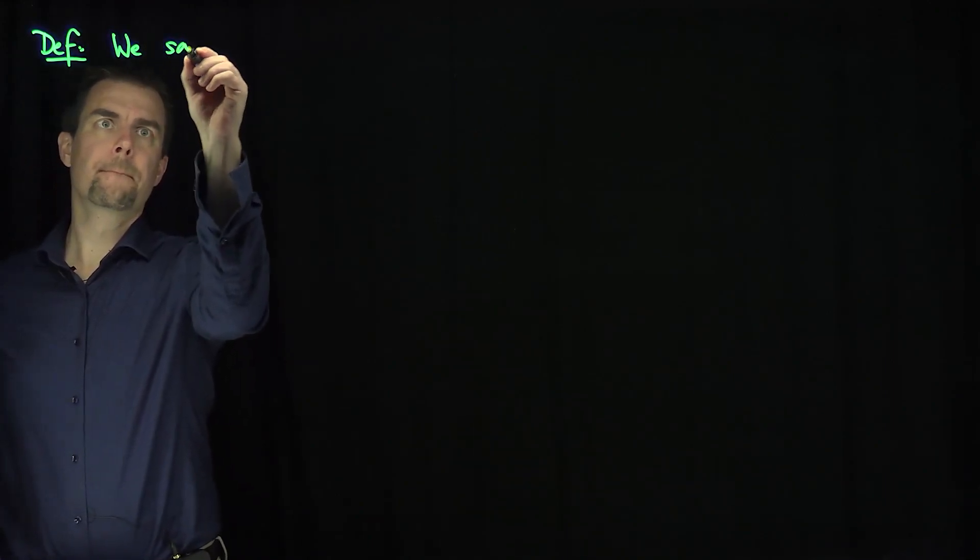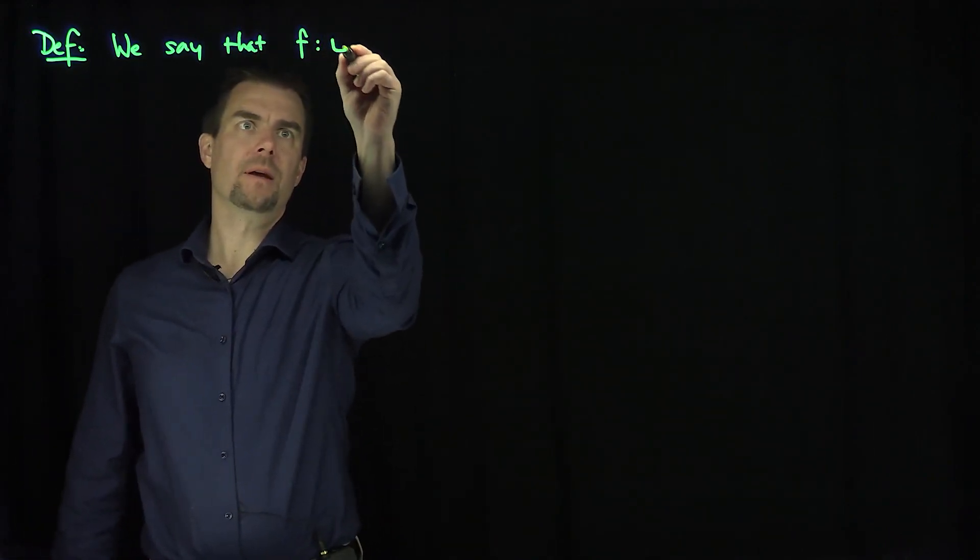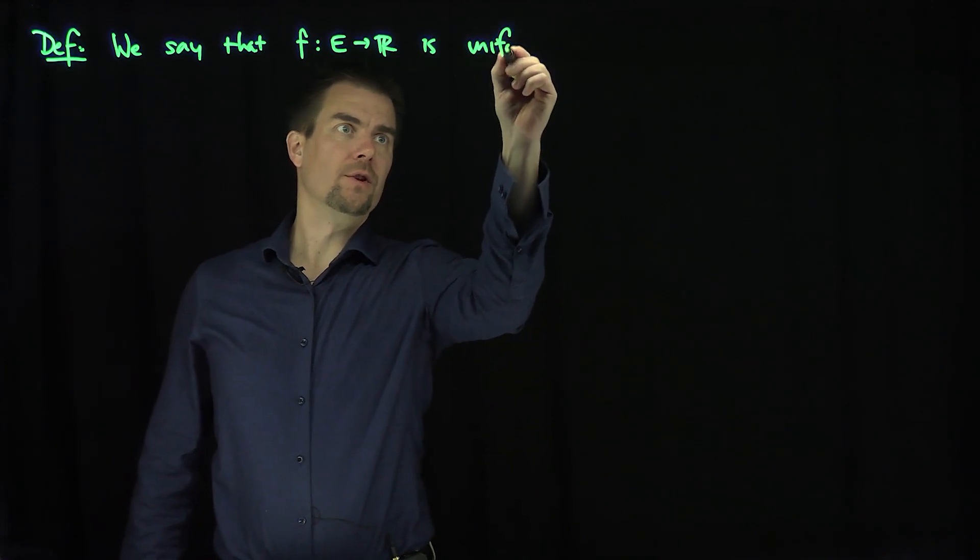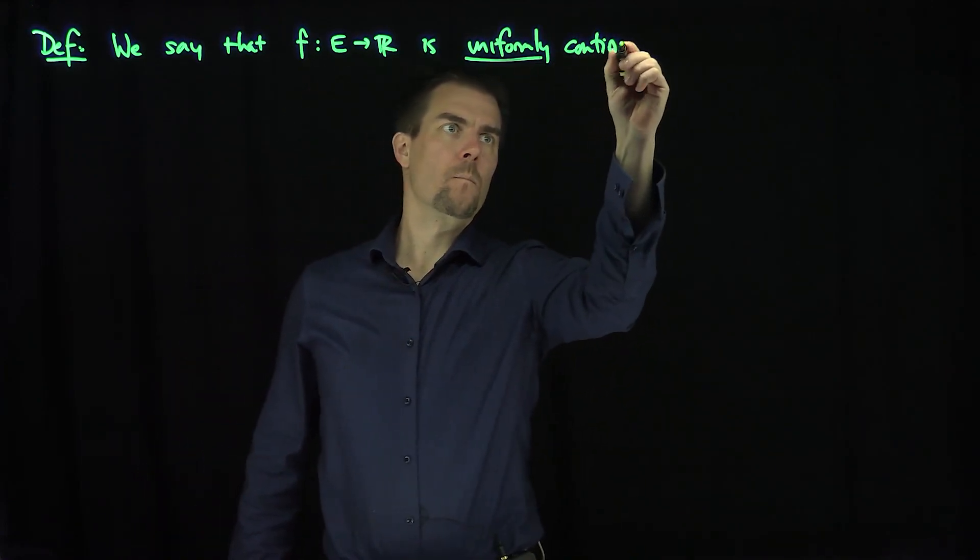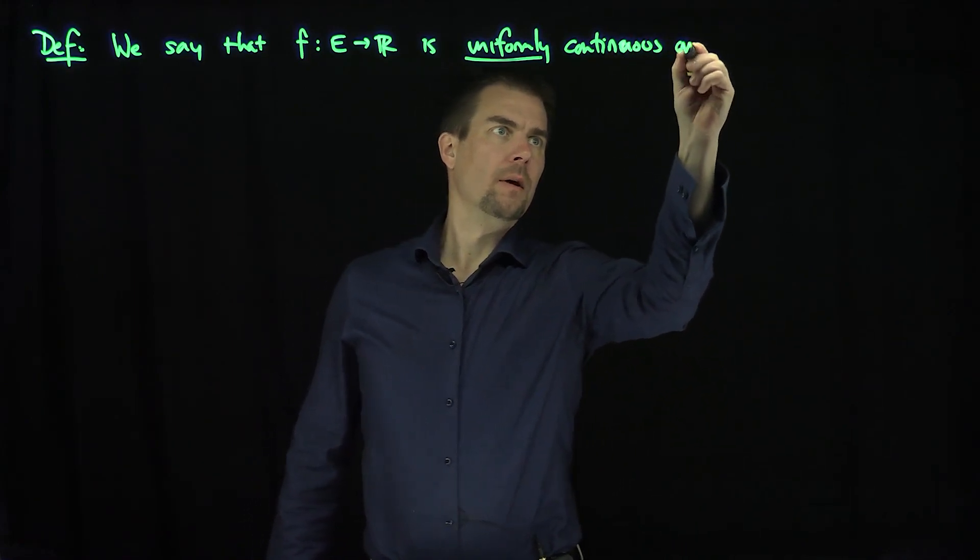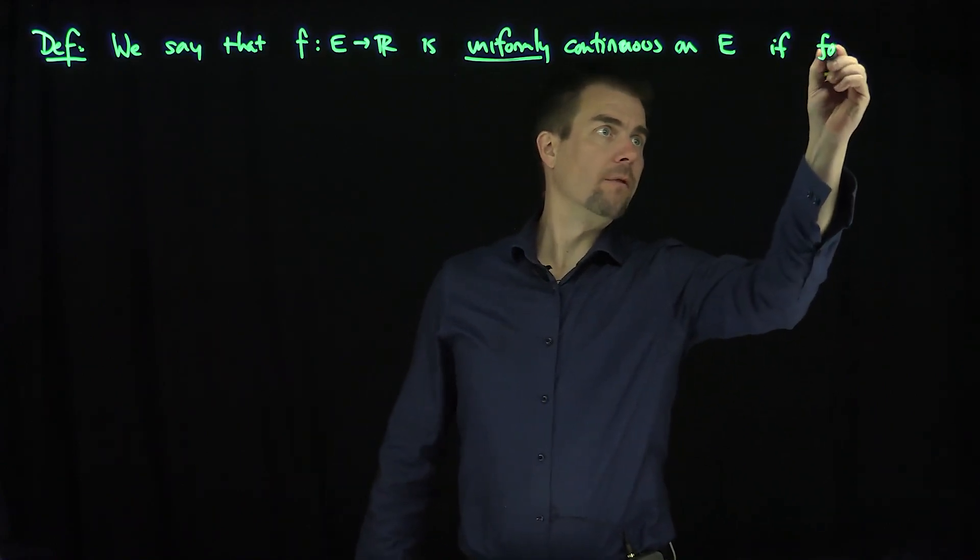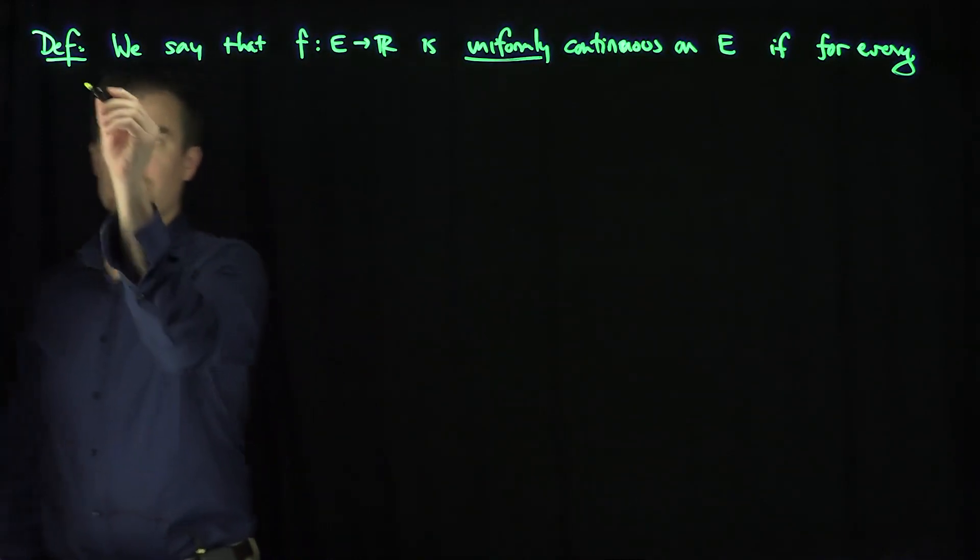We say that F mapping E into R is uniformly continuous on E if for every epsilon greater than zero,